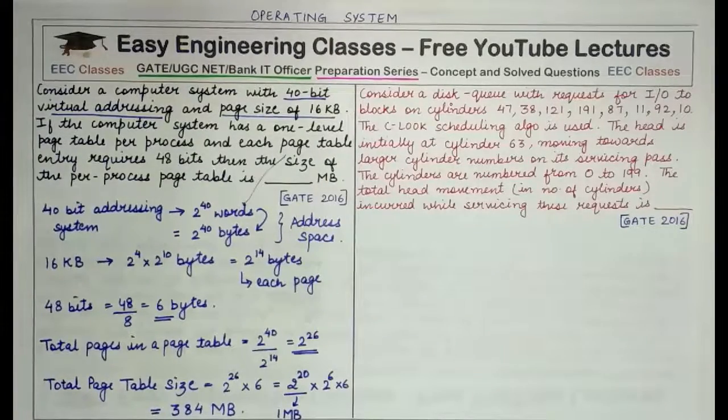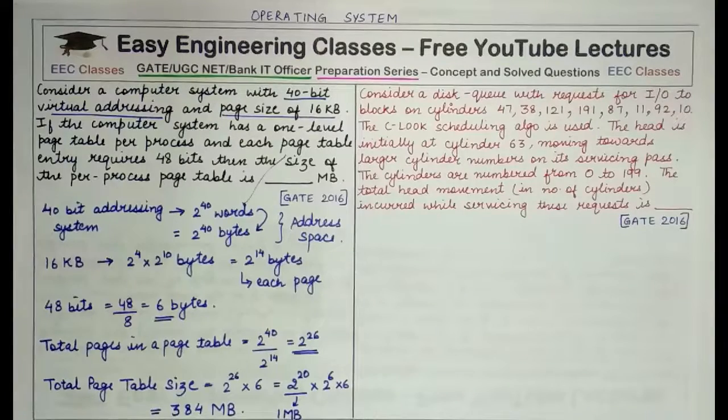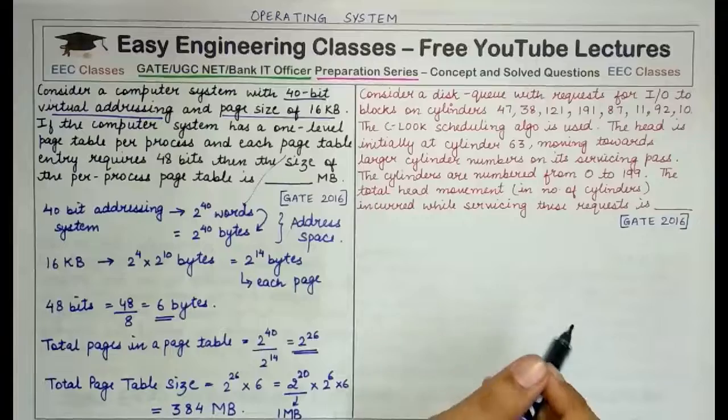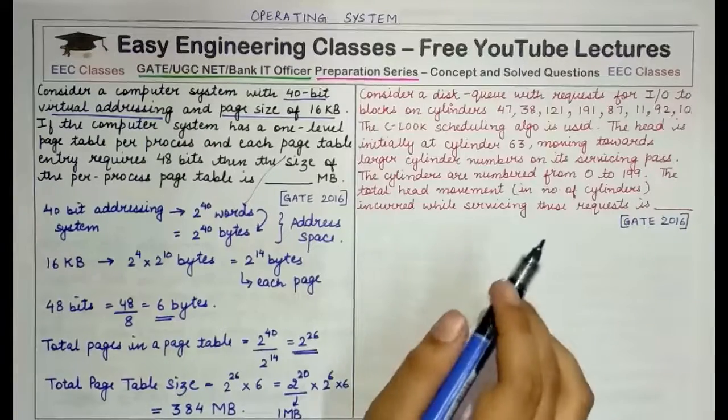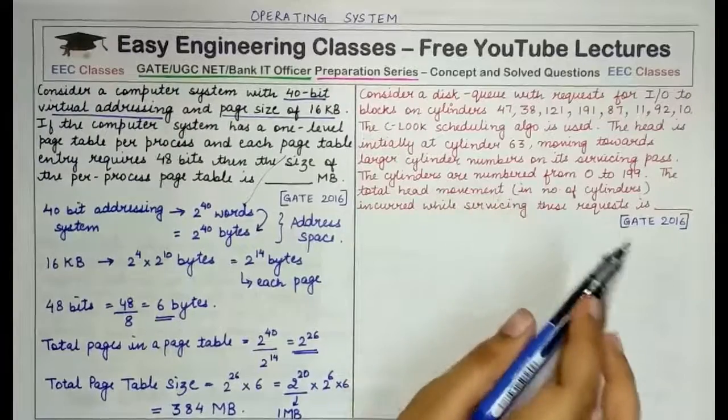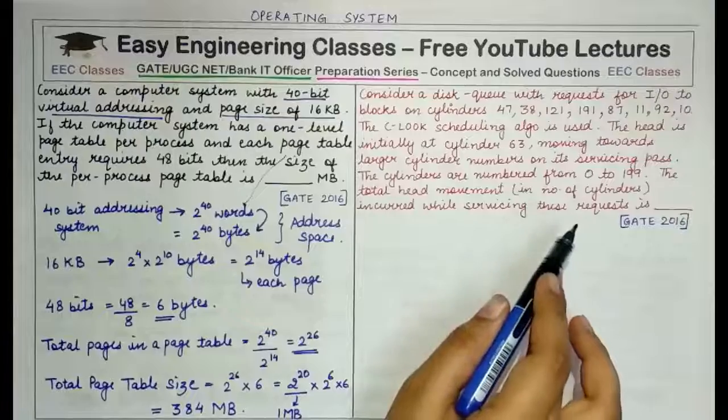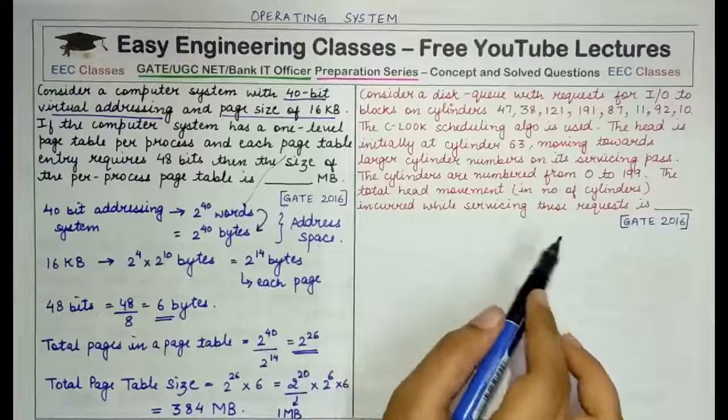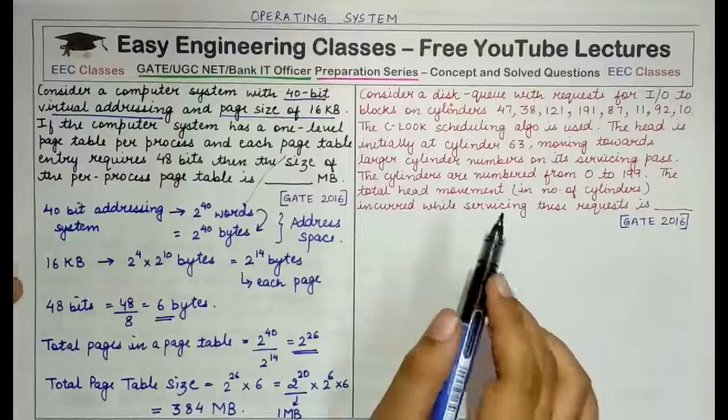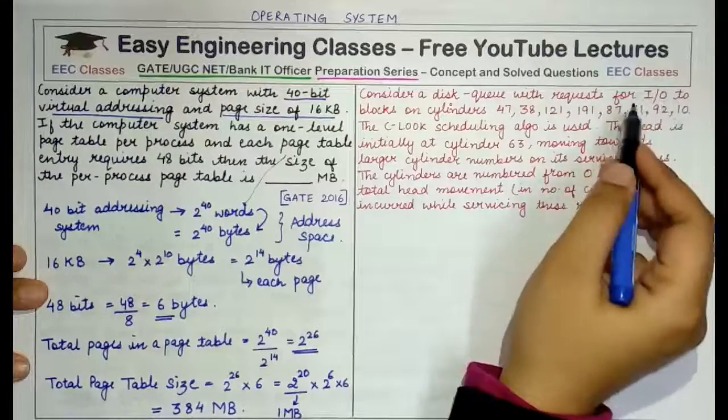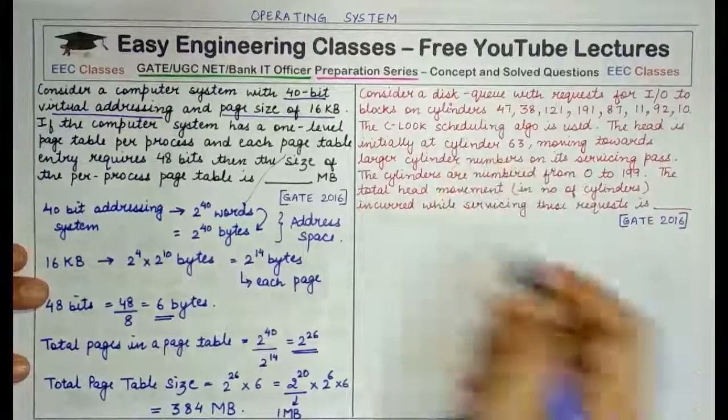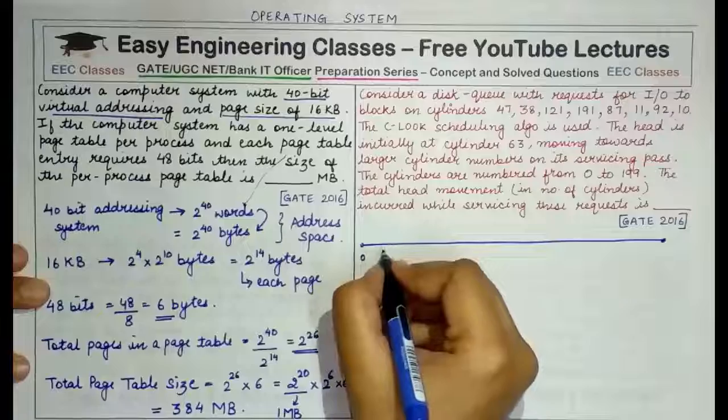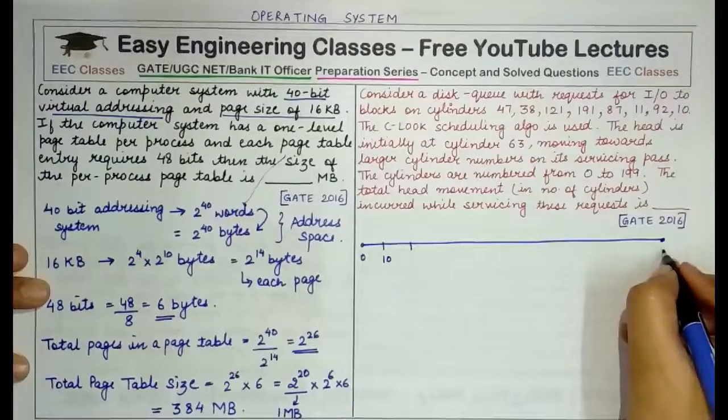The second question says that consider a disk queue with requests for input-output to blocks on cylinders in this particular order. The CLOOK scheduling algorithm is used. The head is initially at cylinder 63 moving towards larger cylinder numbers on its servicing pass. The cylinders are numbered from 0 to 199 and total head movement in number of cylinders incurred while servicing these requests is.